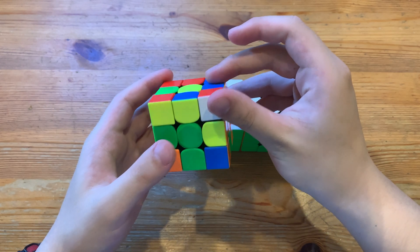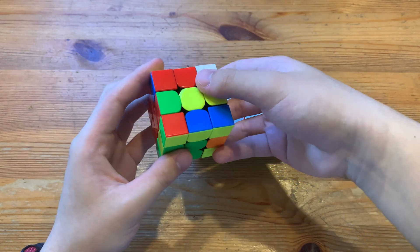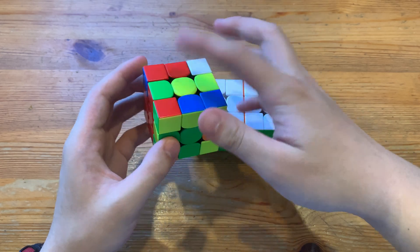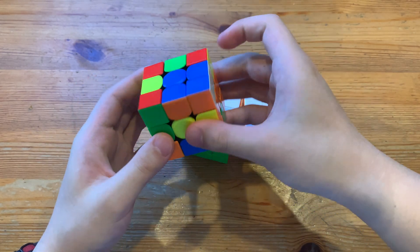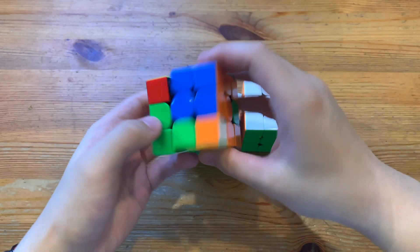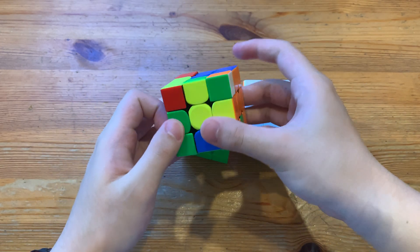And then here, once I do the r, my hand will already be up here, so I'll just go right into this alg to solve the pair. And this alg is actually very, very fast. But anyways, just do this alg to solve it.